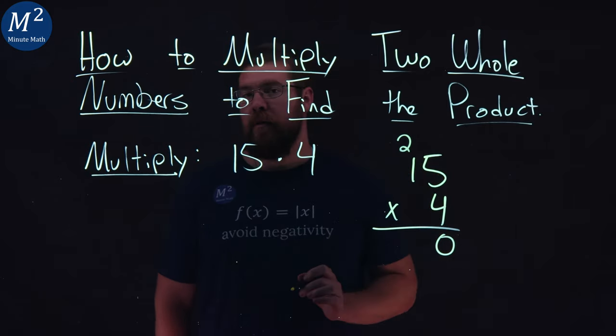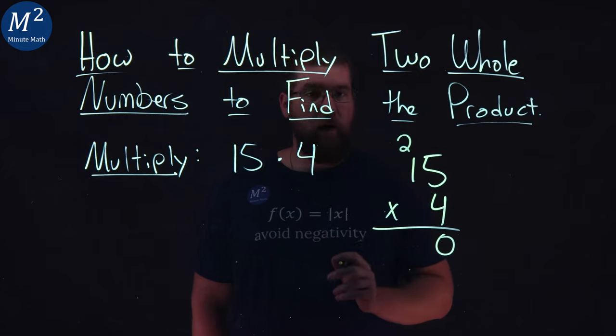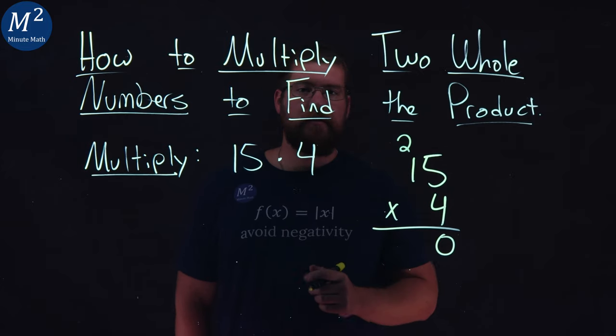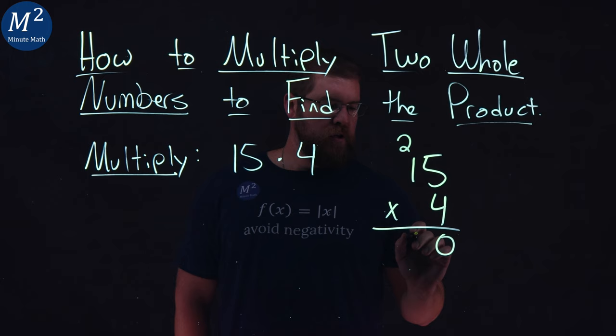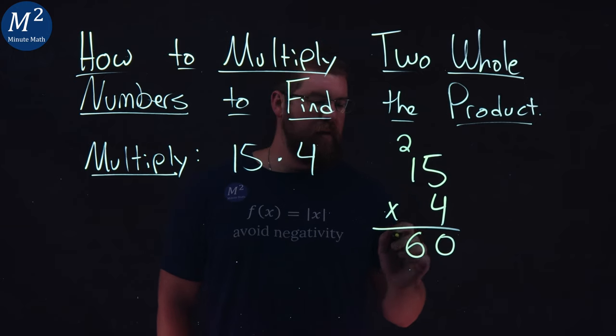Now I multiply 4 times the 1. 4 times 1 is 4 plus 2 gives me 6. So I'm going to put a 6 right here and there we have it.